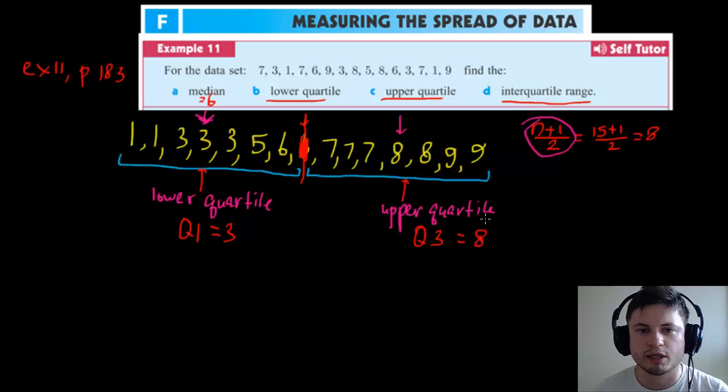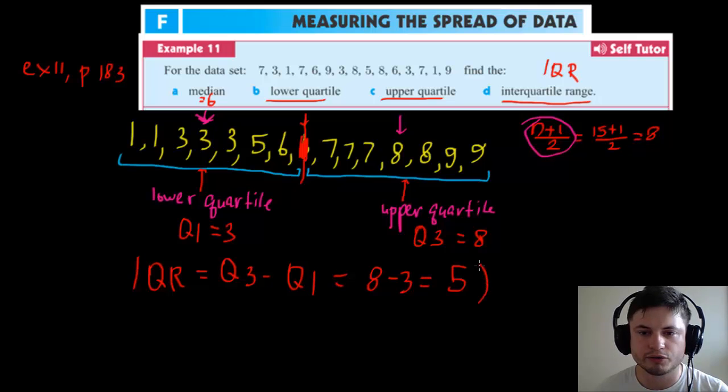8. This is our lower quartile and upper quartile. And interquartile range, as you may guess, is basically one minus the other. So IQR—interquartile range—IQR = Q3 - Q1, which is basically 8 - 3, which is 5. This number right here shows us how spread out the data